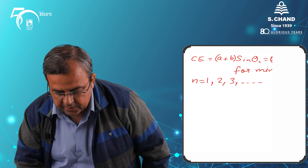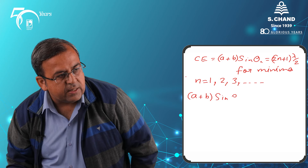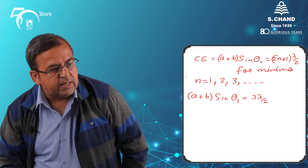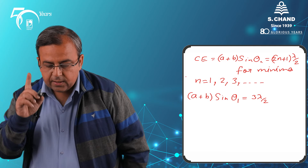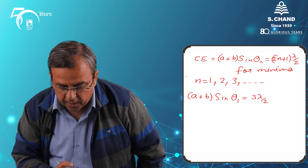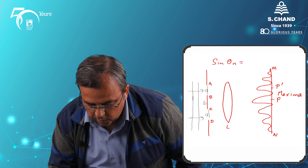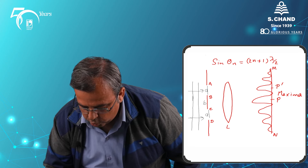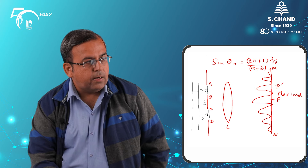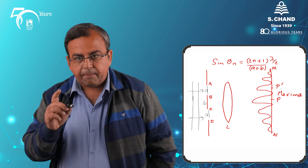So sinθₙ = (2N + 1)λ / 2(A + B). Here A is the slit width, B is the opaque portion width, lambda is the wavelength of the incident wave, and N is the order — 1, 2, 3, and so on — giving us the direction of the corresponding minima.